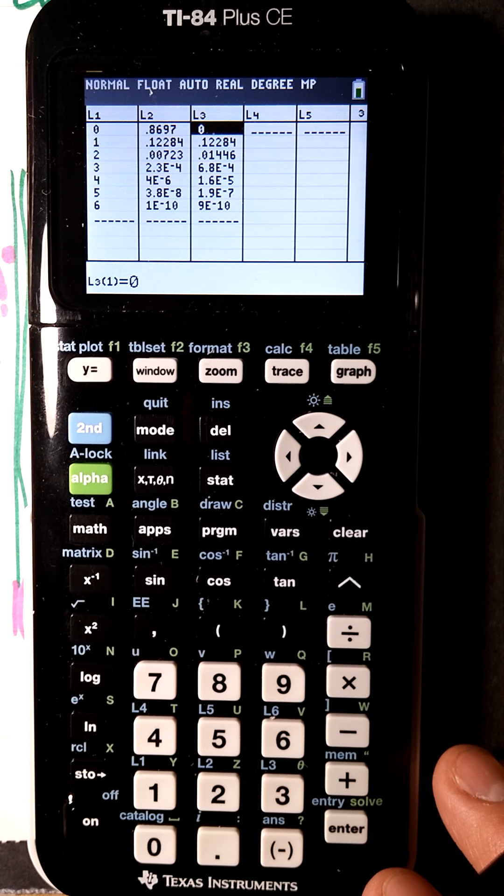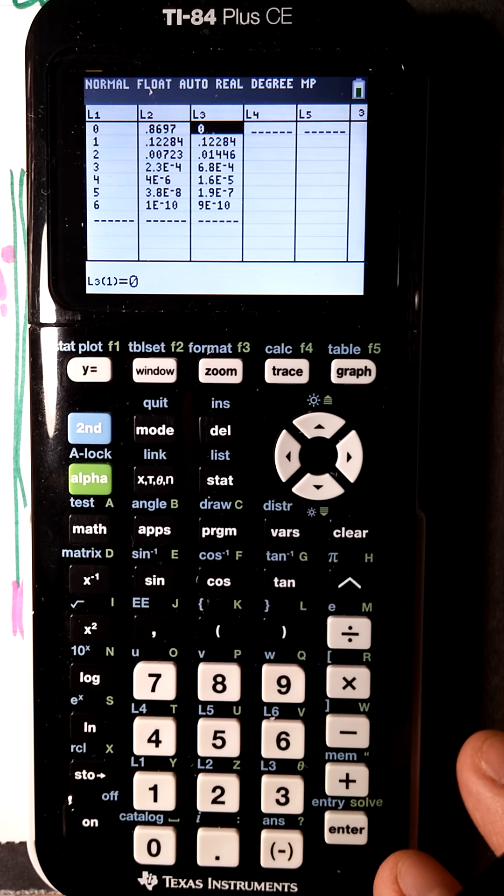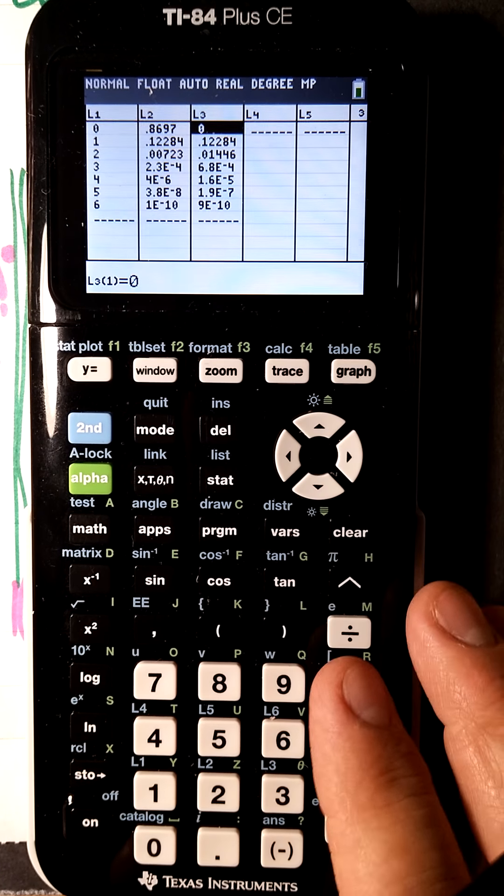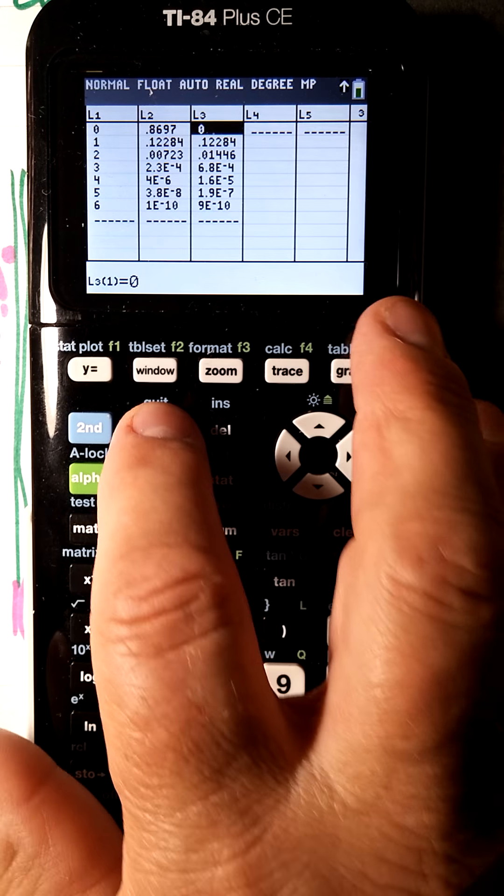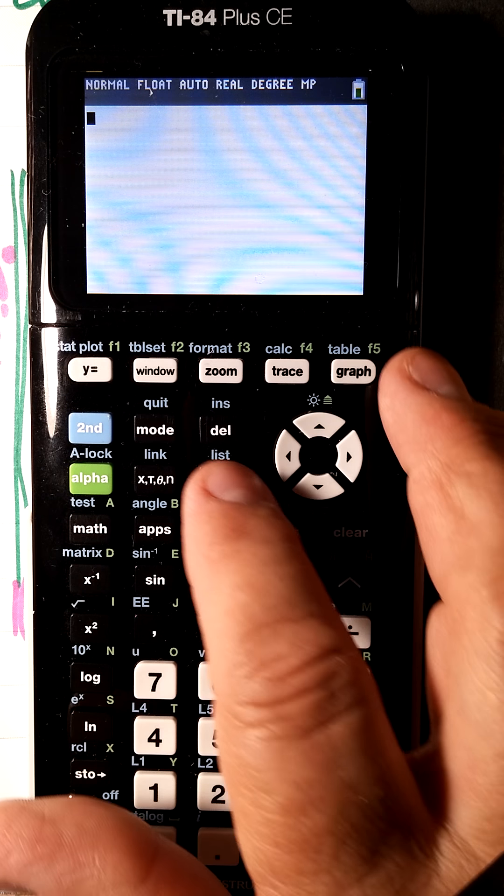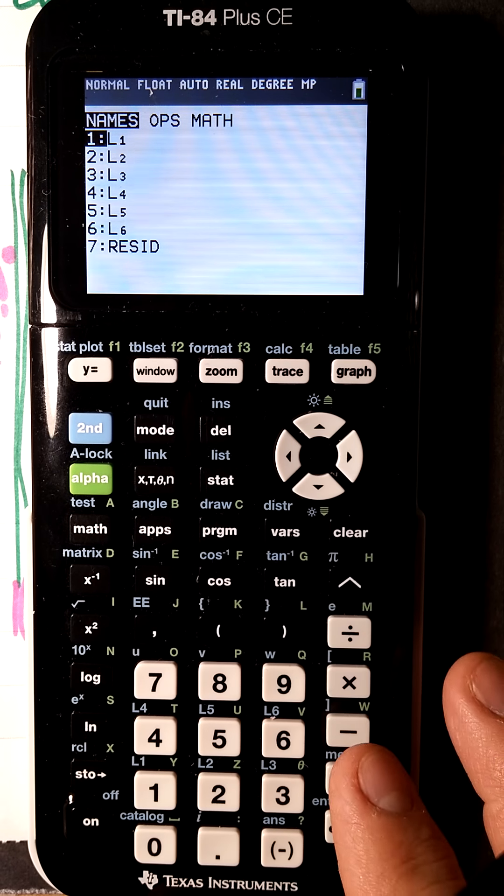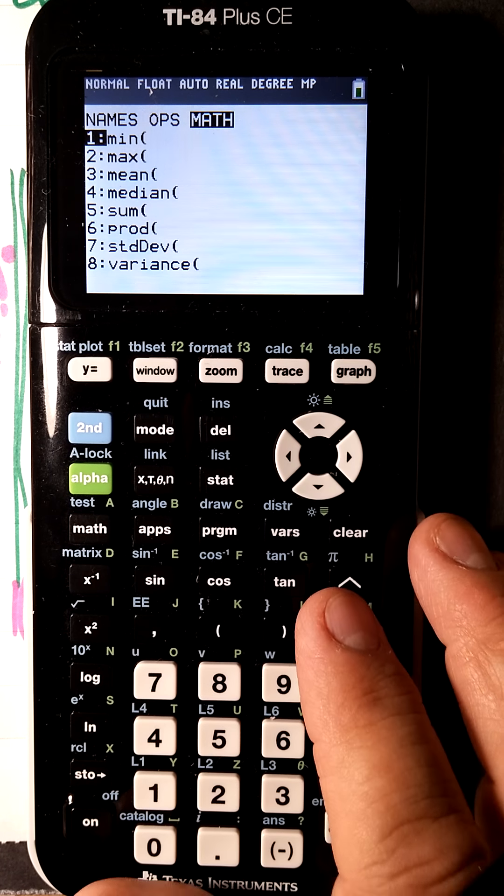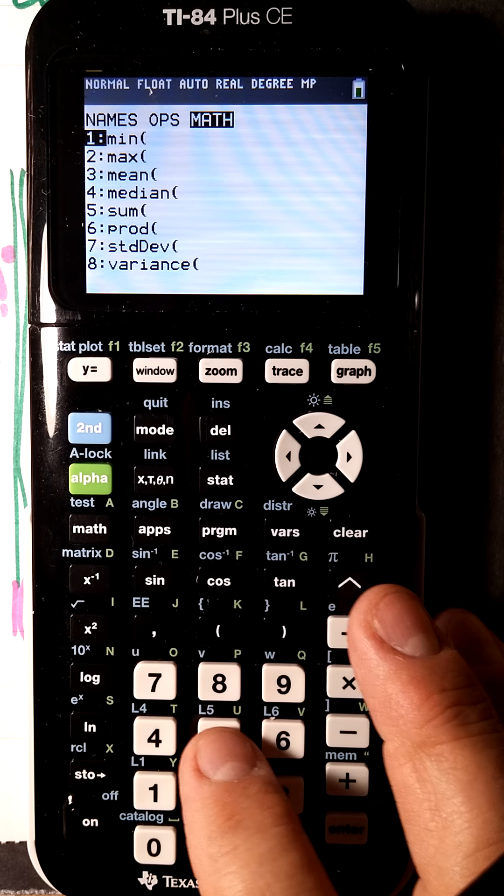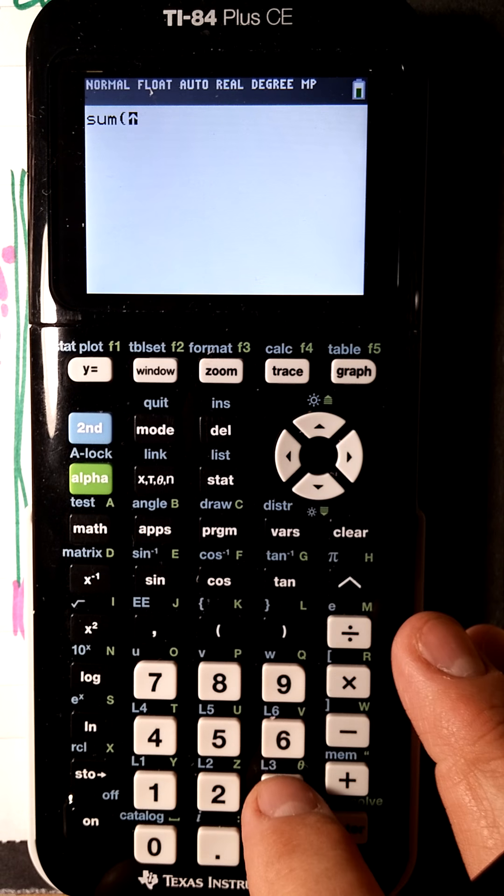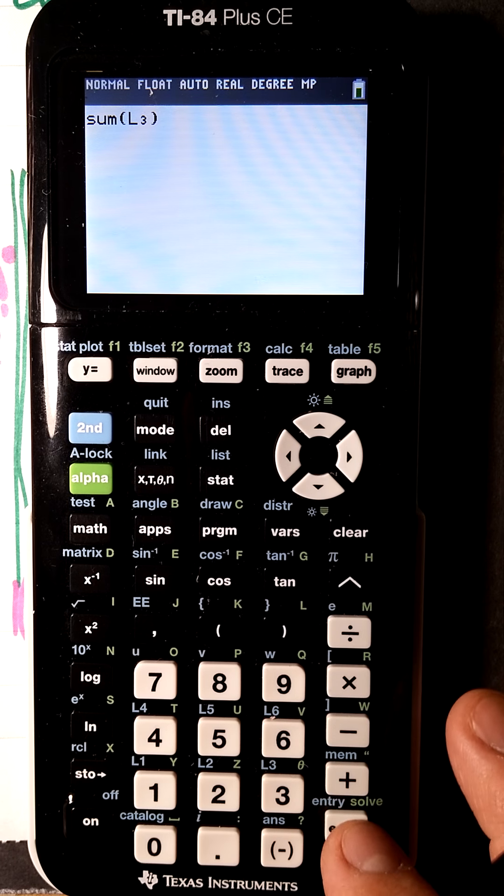What we need is the sum of that. Once you get those three set up, get out with second quit. We would like from the list menu, which is second stat, go over to math number 5, the sum of L3, second 3.